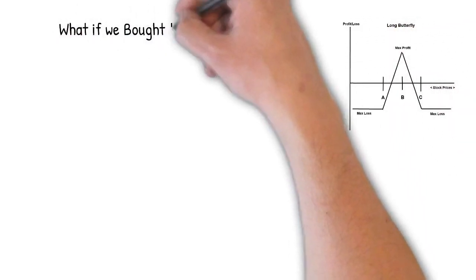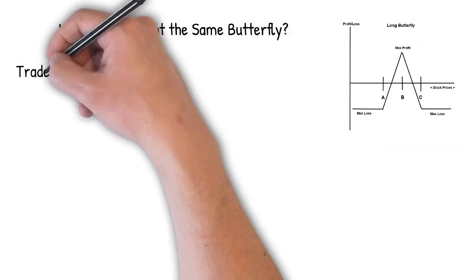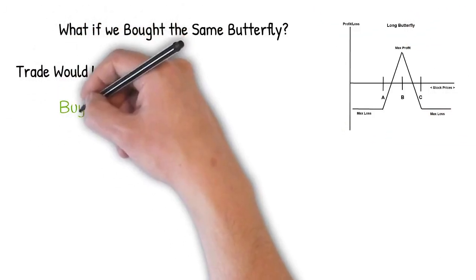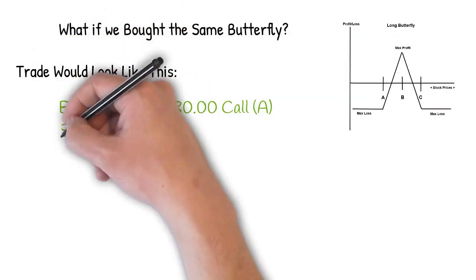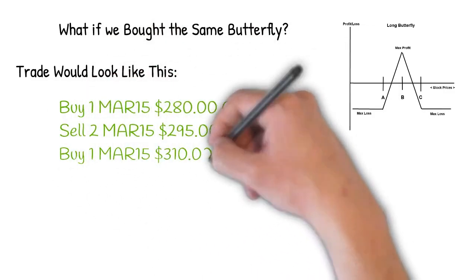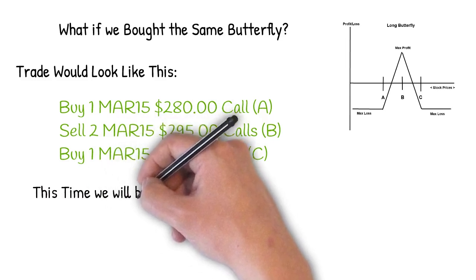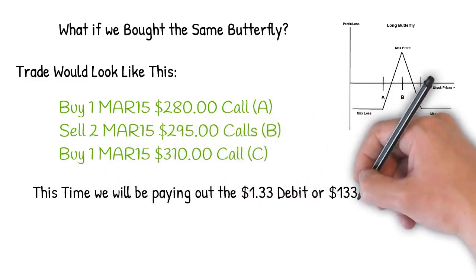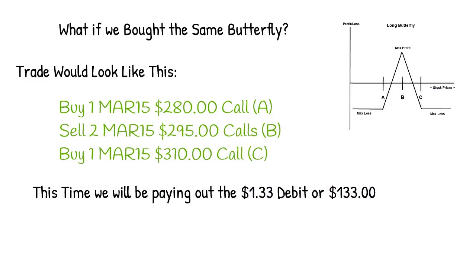So what would it look like if we bought this same butterfly? This time we would buy one March 15, 280 call, sell two March 15, 295 calls, and buy one March 15, 310 call. This time we are going to pay $1.33 to get into this trade or $133.